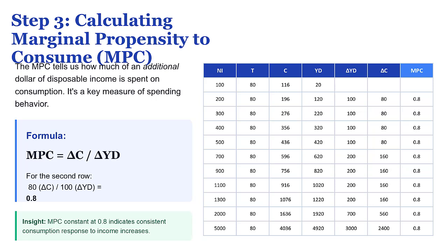So let's add two new columns to our table to track this. When disposable income goes from 20 up to 120, the change is 100. You see that little triangle symbol? That's the Greek letter Delta, and it's just shorthand for 'the change in.' So the change in income is 100. At the very same time, consumption went from 116 to 196, so the change in consumption is 80. All we're doing is finding the difference between each row.